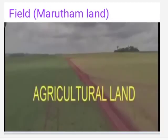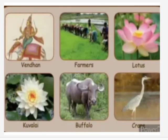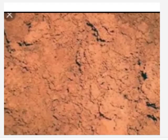Next, we learn about the field — Marudam land. The god is called Vendan. Occupation of Marudam people: farmers. Flower: lotus and koalai. Animal — buffalo; bird — crane. The people and their occupations: Uraan — small landlord; Ulawan — farm worker; Adayar — merchant. The soil of Marudam land is formed of alluvial soil and red soil.